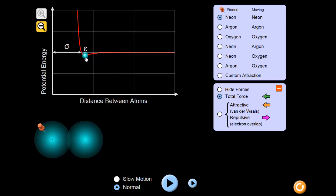Now that we've looked at the total force, let's see what individual forces are at play. The orange arrows represent attractive forces, and the pink arrows represent repulsive forces.